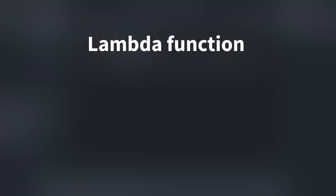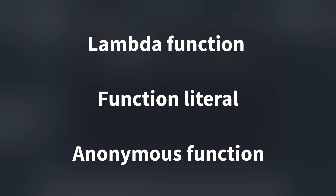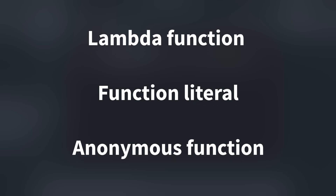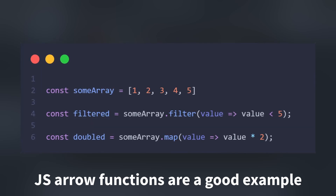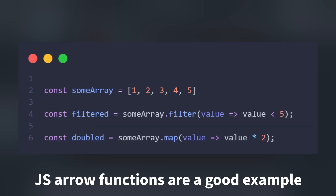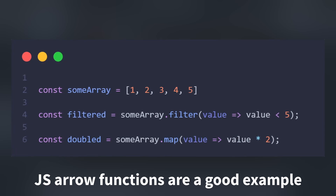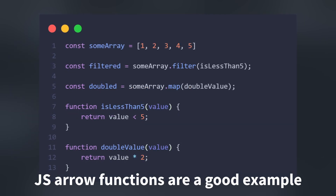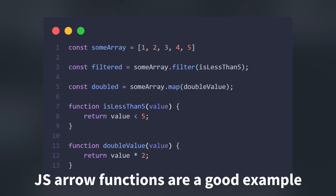A Lambda function, also sometimes called a function literal or anonymous function, is a function that isn't declared and bound to a specific identifier. Typically, these are short, inline functions designed to take care of a small task immediately where it's needed, like sorting or filtering an array, without having to declare a bunch of functions in your class that are only needed in one spot.